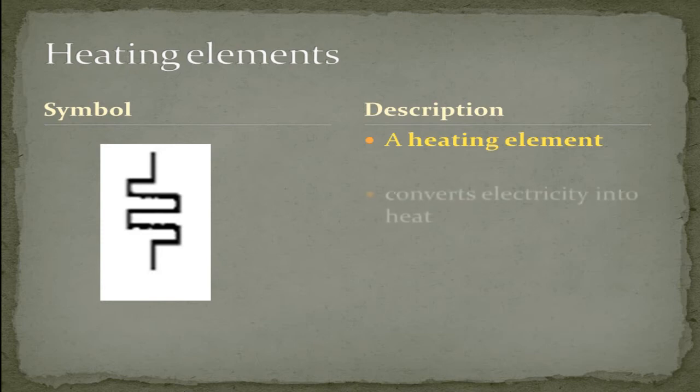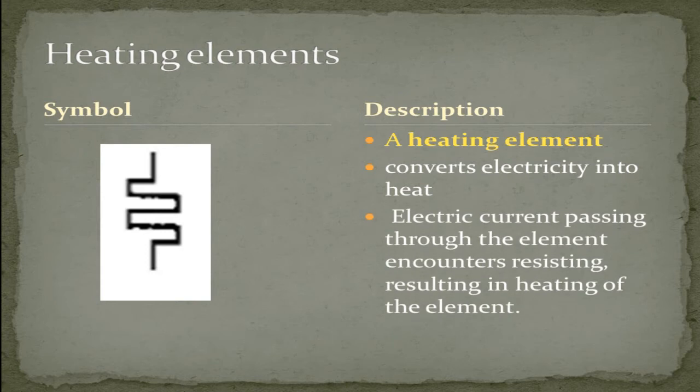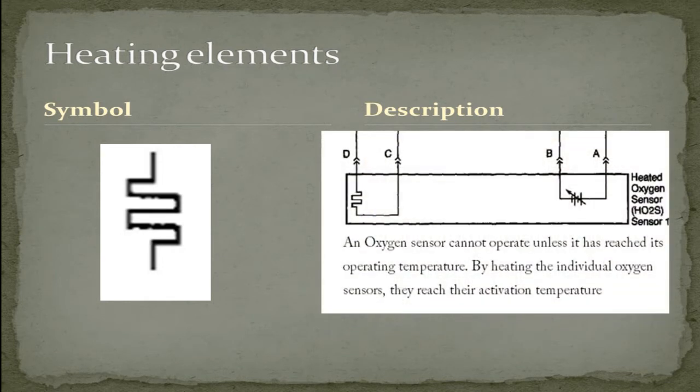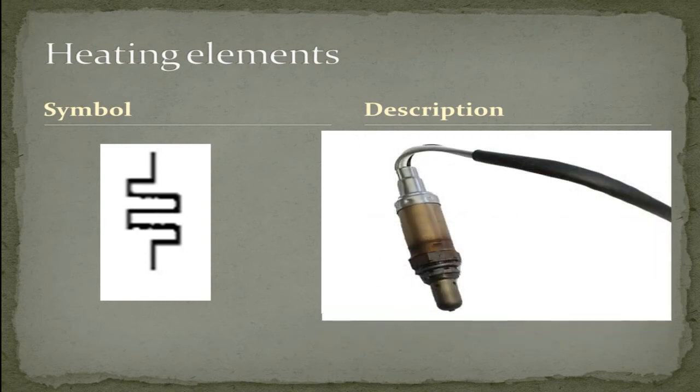A heating element converts electricity into heat. Electric current passing through the element encounters resistance, resulting in heating of the element. Here's an illustration of an oxygen sensor with a heated element. An oxygen sensor cannot operate unless it has reached its operating temperature. By heating the individual oxygen sensor, they reach their activation temperature. And as you can see in the illustration, the heating element that helps it reach that temperature. And here's an illustration of one of many style oxygen sensors.